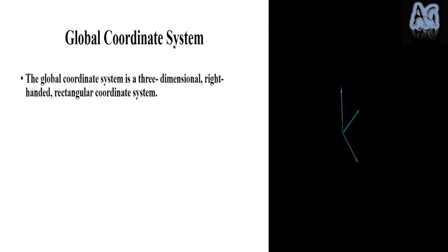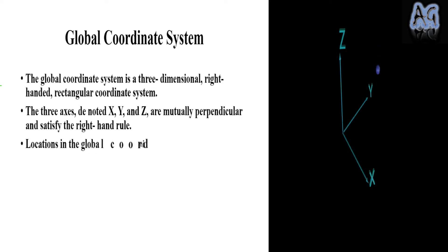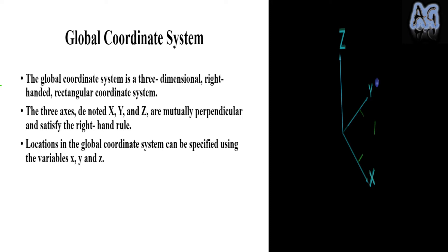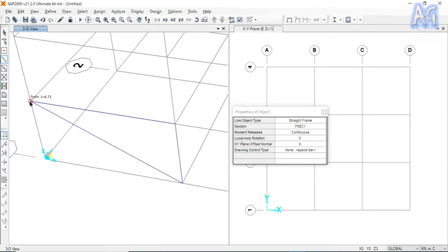The global coordinate system is a three-dimensional right-handed rectangular coordinate system. It has three axes denoted by X, Y, and Z, which are mutually perpendicular and satisfy the right-hand rule. Location in the global coordinate system can be specified using the variables X, Y, Z. Any object drawn or any coordinate system defined in SAP2000 software will use the global coordinate system as a reference.